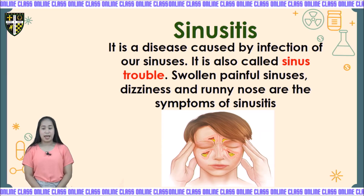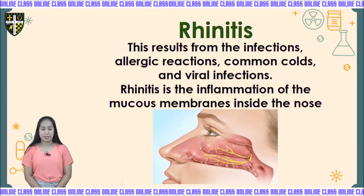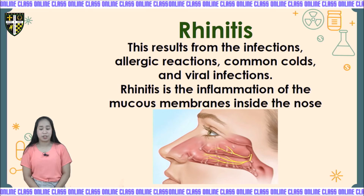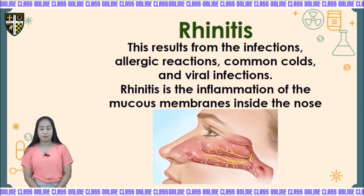The next ailment is rhinitis. Rhinitis results from infections, allergic reactions, common colds, and viral infections. Rhinitis is the inflammation of the mucous membranes inside the nose. Inflammation means the swelling of the mucous membrane. That makes breathing difficult. The production of mucus in the nose is increased by the inflammation.